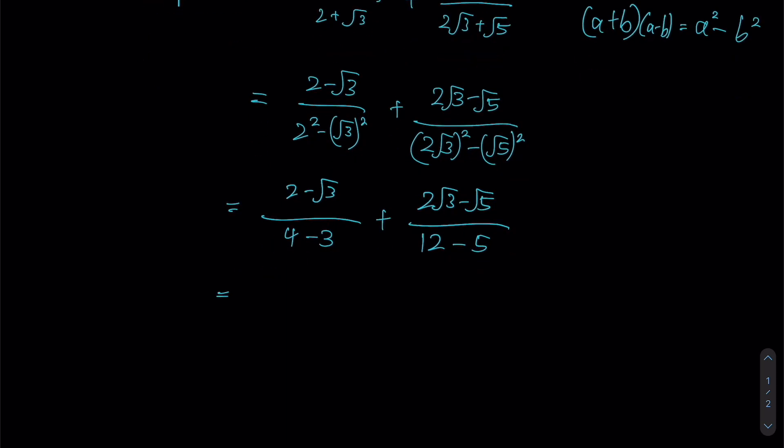So since my denominator here is going to be 1, this fraction will actually just be 2 minus root 3. Whereas the one on my right-hand side, since my denominator is going to be 7, I will split my numerator up into two separate fractions like this, both of which are over 7. All right,